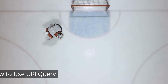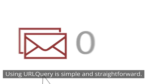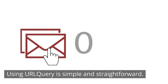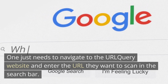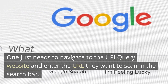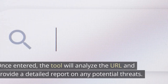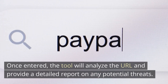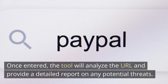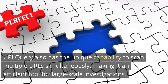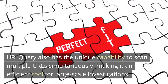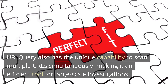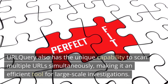How to use Earlcari? Using Earlcari is simple and straightforward. One just needs to navigate to the Earlcari website and enter the URL they want to scan in the search bar. Once entered, the tool will analyze the URL and provide a detailed report on any potential threats. Earlcari also has the unique capability to scan multiple URLs simultaneously, making it an efficient tool for large-scale investigations.